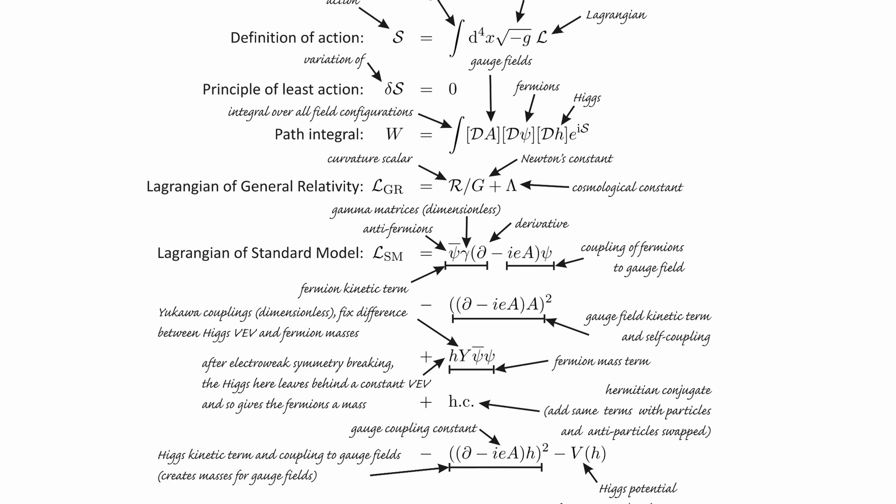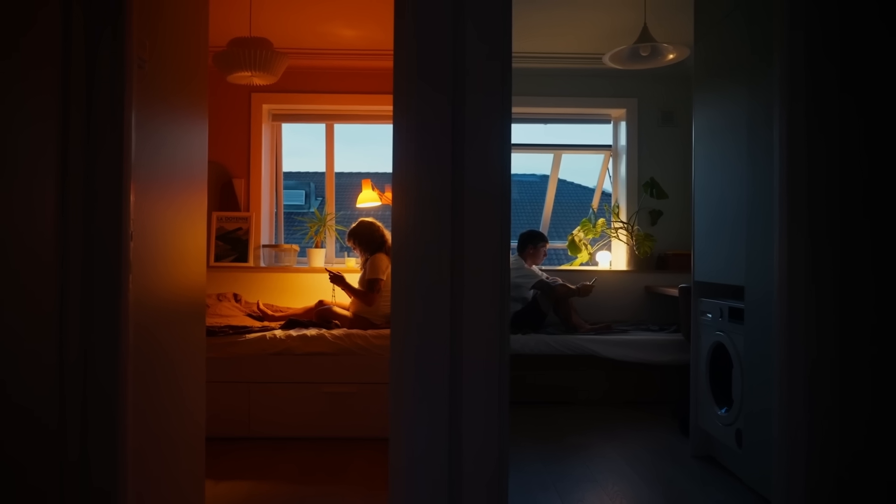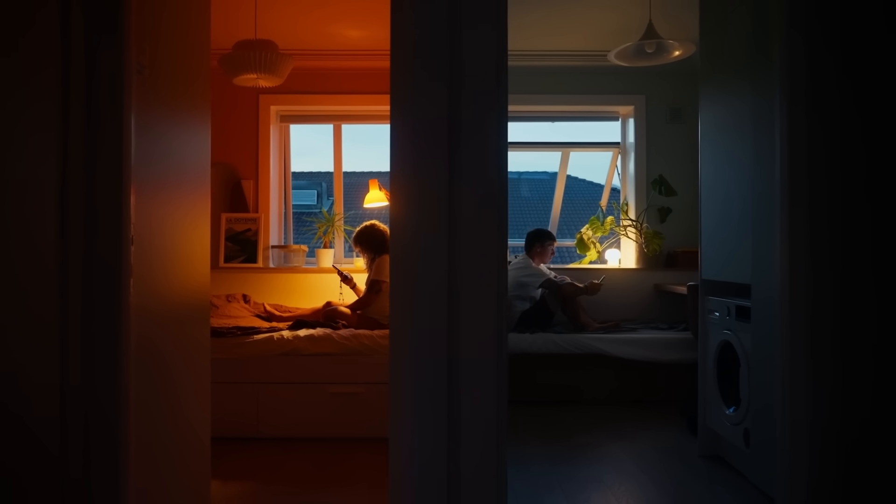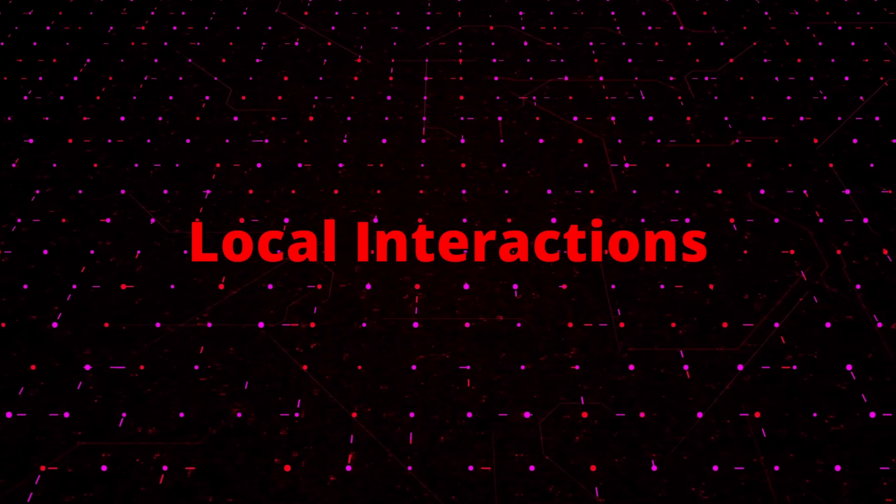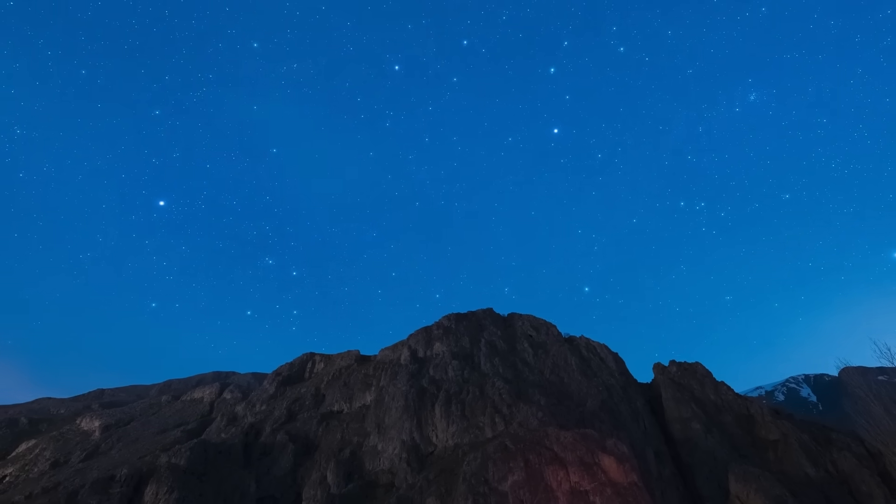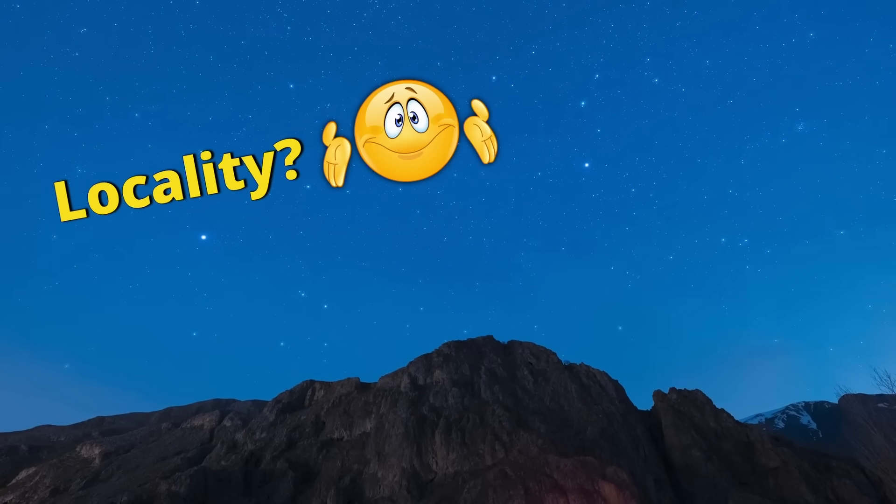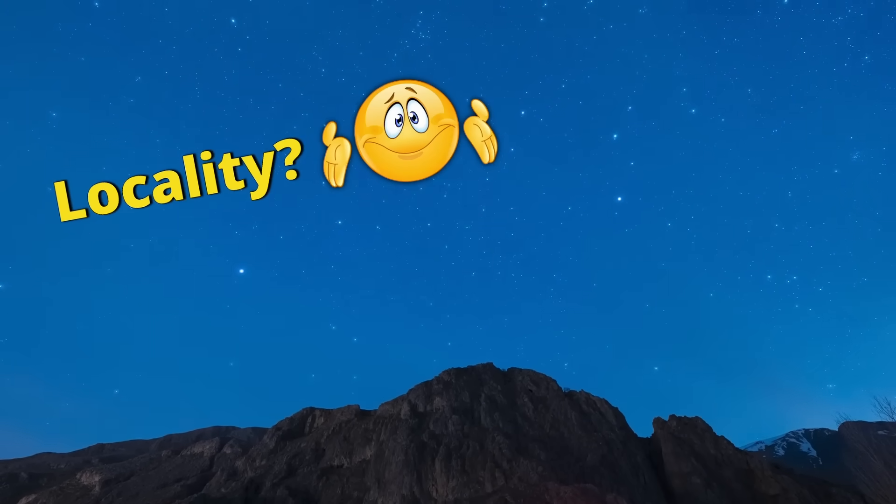The laws of physics that we have discovered have one thing in common. They are local. This means that objects in two different locations can't interact with each other. They don't know anything about each other. It's only by sending some sort of signal from one object to the other that they can react to each other's presence. We have no idea why the laws of nature are this way. There's no particular reason why they should be. It's just that it corresponds to our experience.